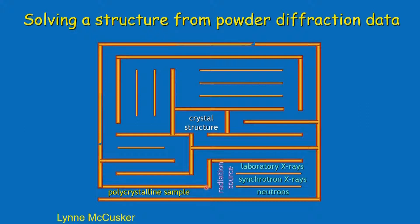First you collect the data using radiation — which could be laboratory X-rays, synchrotron X-rays, or neutrons; all three can be used. After data collection we need to do the indexing — we get the cell dimensions and then find the space group. We guess the space group because in powder diffraction a unique determination of the space group is not possible. If it is a monoclinic system, we try all possible space groups; the approach is a bit tedious.